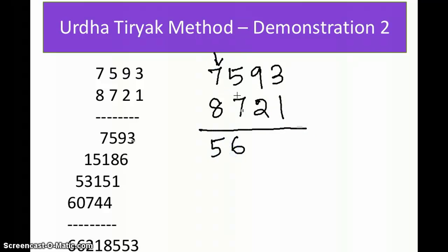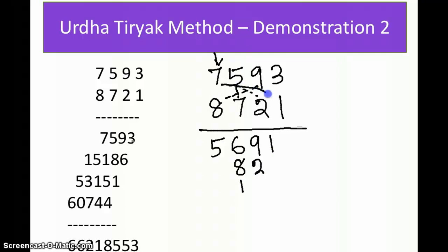Next, 7 × 7 is 49, plus 8 × 5 is 40, giving 89. Next, taking three numbers together: 7 × 2 is 14, plus 8 × 9 is 72, plus 7 × 5 is 35, giving 121 — write it as 1, 2, 1. Next, taking four numbers: 7 × 1 is 7, plus 8 × 3 is 24, plus 5 × 2 is 10, plus 9 × 7 is 63.